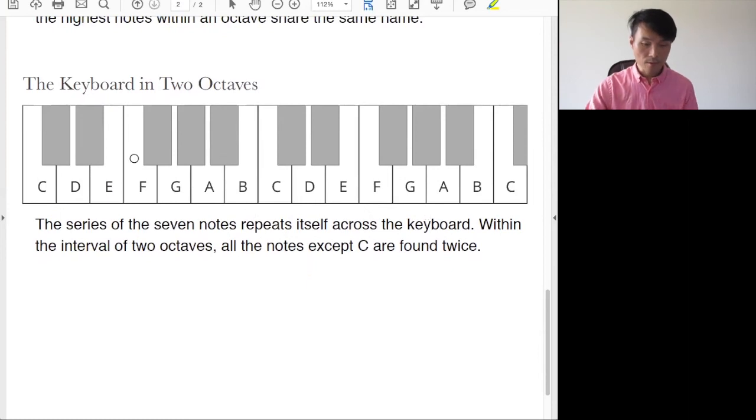The keyboard in two octaves. The series of seven notes repeats itself across the keyboard. Within the interval of two octaves, all the notes except C are found twice. So here is the beginning of my first octave. And the second octave ends here, right? So I have a span of two octaves right here.